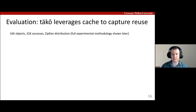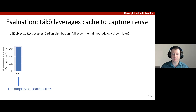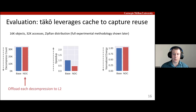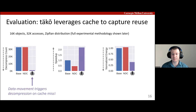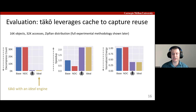Let's now see how TACO performs in this example. We evaluate an application which computes an average over an array of compressed data accessed using a skewed Zipfian distribution. The baseline decompresses data at the core on each access. We first evaluate a near-data computing version which offloads decompression to the L2 cache — it actually performs worse than the baseline because decompressing data at the L2 loses locality provided by the L1. In contrast, TACO achieves significant speedup and energy savings by decompressing data only once when there's a cache miss. Caches then capture reuse of popular data to avoid decompressing the same data repeatedly. TACO is close to an ideal engine with infinite compute because performance is not about raw compute — it's about using data movement to know when to compute.